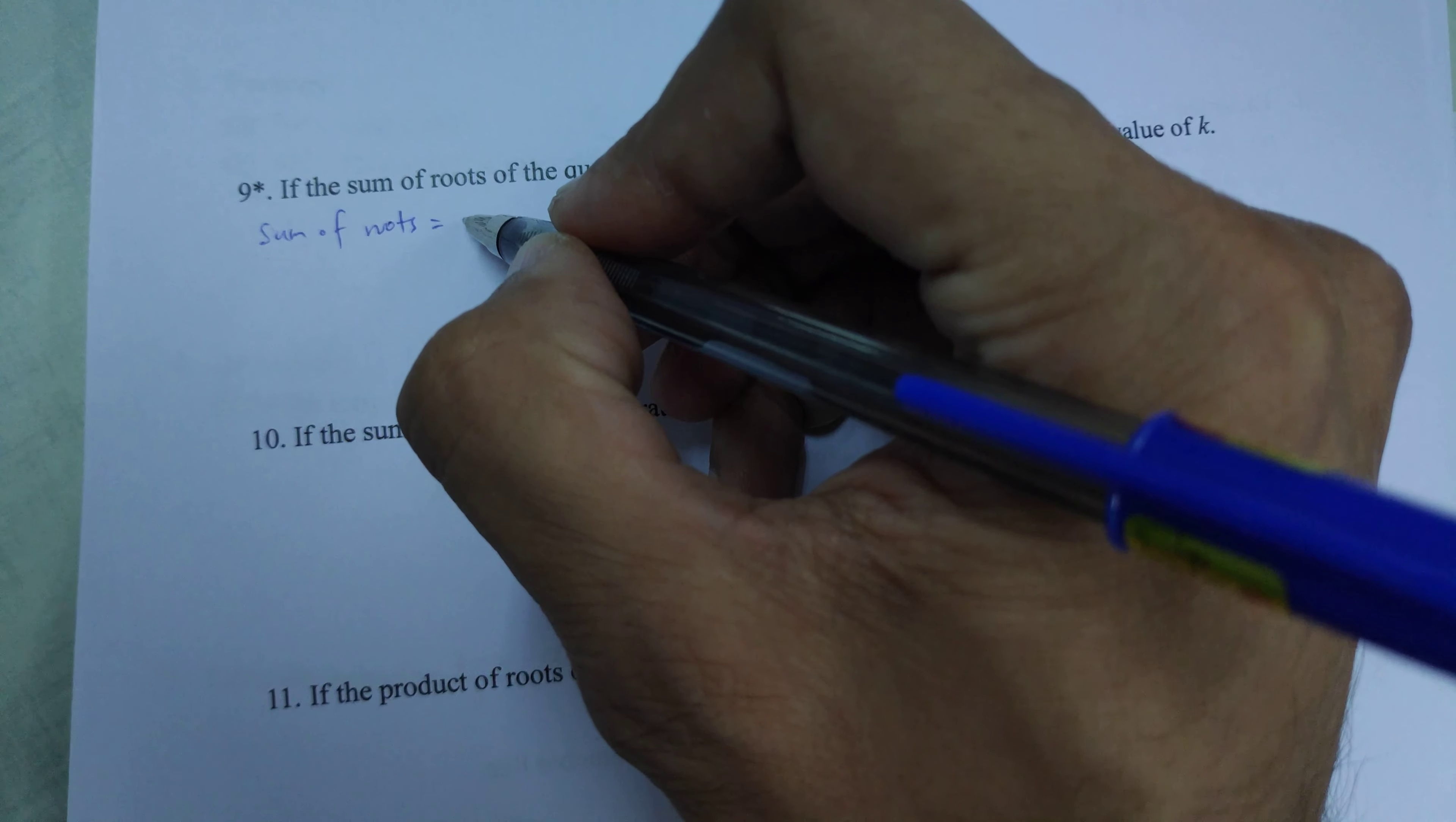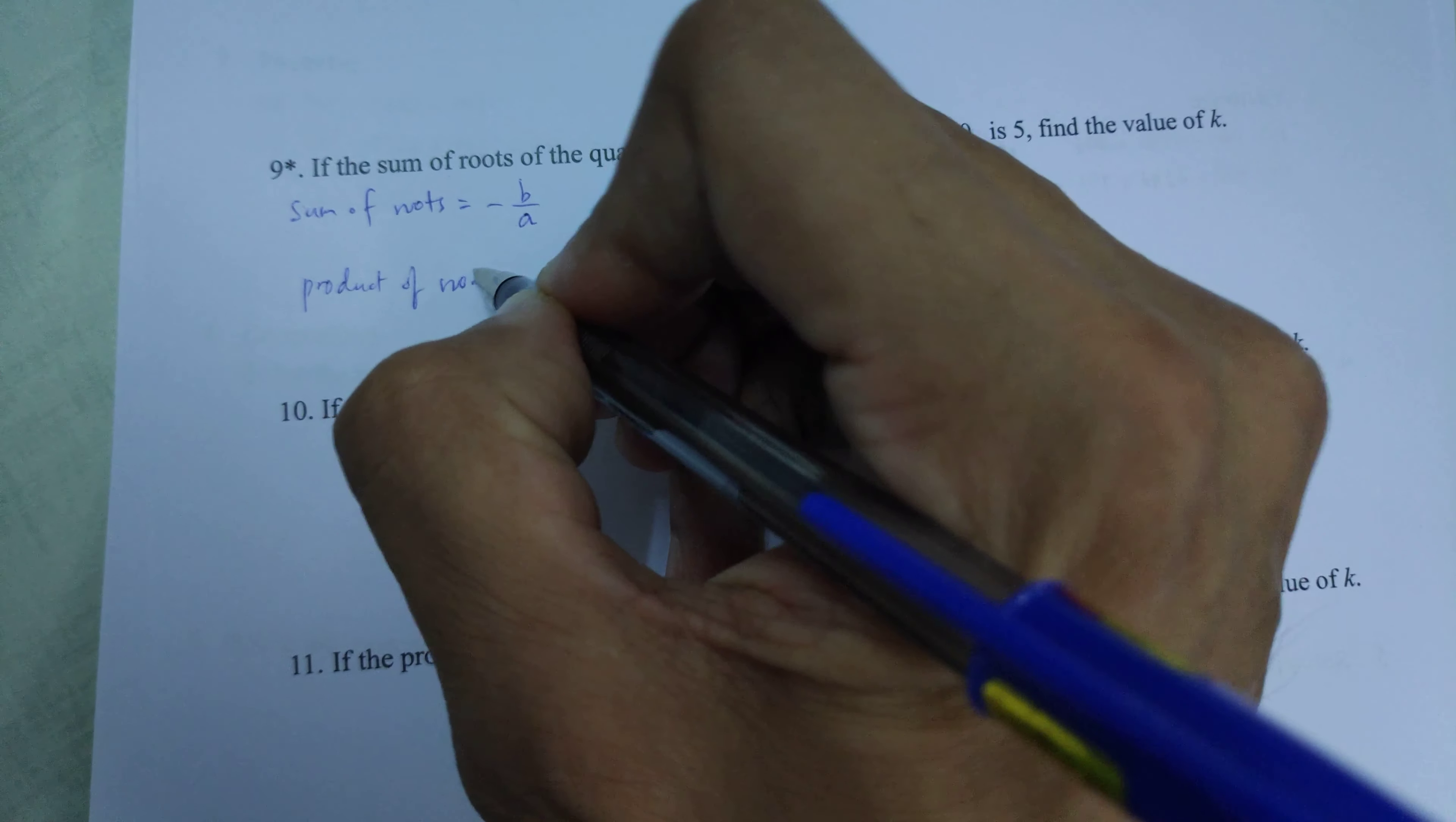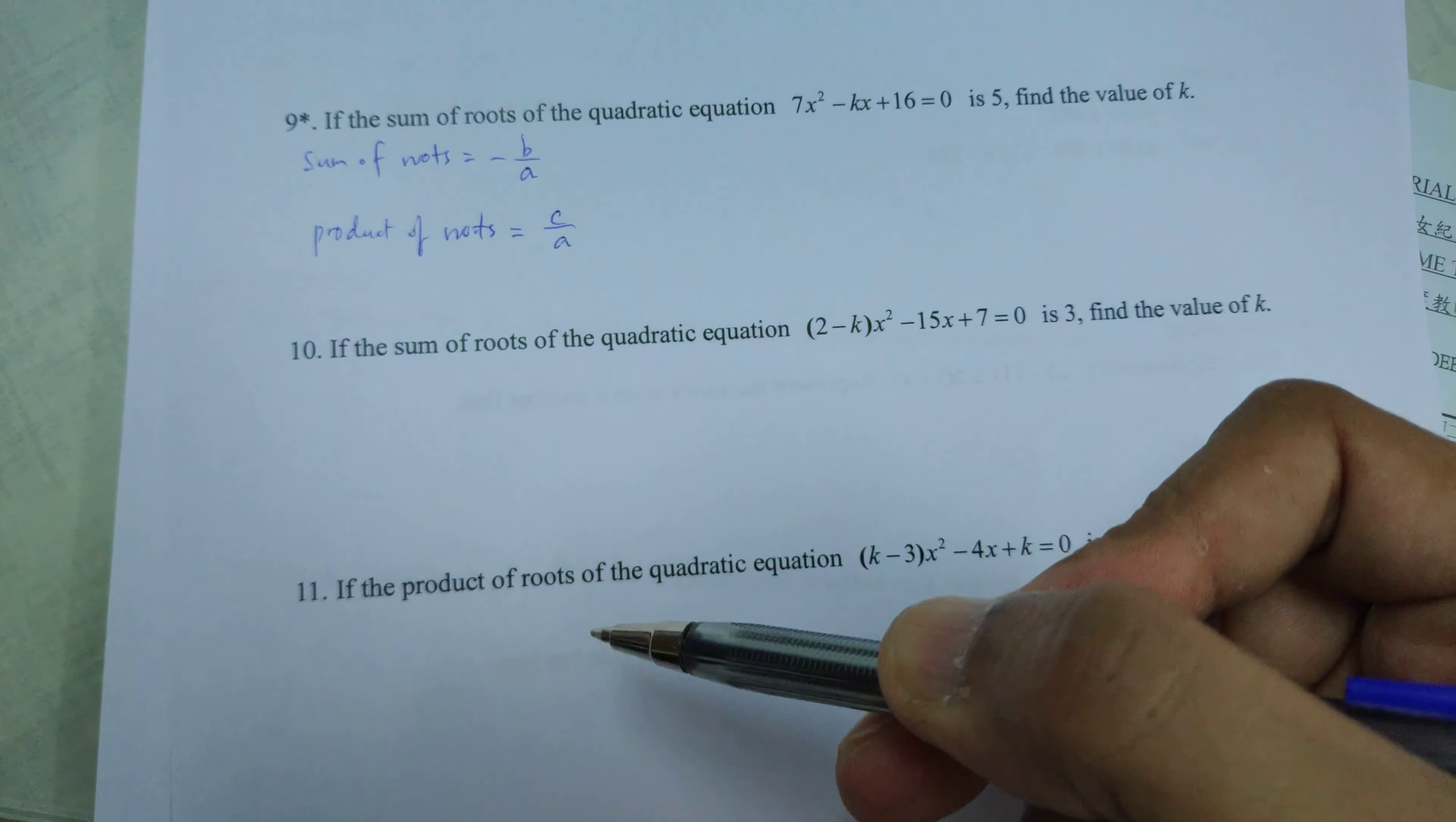The sum of roots is always equal to negative b over a, and the product of roots is always equal to c over a. There's a negative sign for the sum of roots, so we may need to use one of these equations.